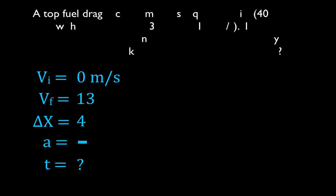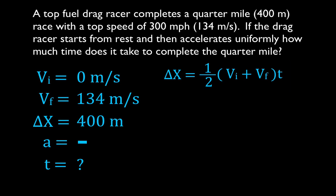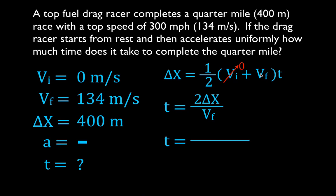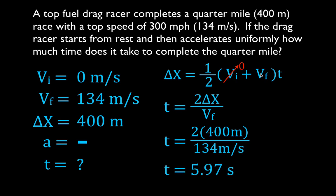We bring the information and equation to the next slide and solve for time. Since the initial velocity is zero, we rearrange to get: t = 2·Δx / v_f. Plugging in: t = (2 × 400) / 134 = 5.97 seconds. That's the time needed for the top fuel drag racer to complete the quarter mile.